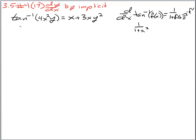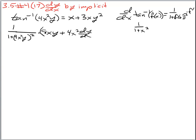So we get 1 over 1 plus x squared times the derivative of x, which in the general case is just 1, but in the better case it is f prime. Applying that, the derivative of the left hand side gives us 1 over 1 plus 4x squared plus 4x squared y, that whole thing squared, times the derivative of the inside, which now requires the product rule: derivative of the first, 8x, times the second, plus the first times the derivative of the second.